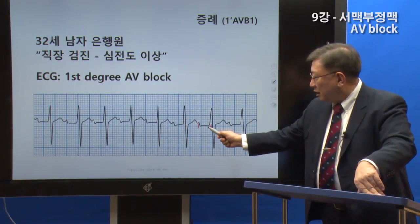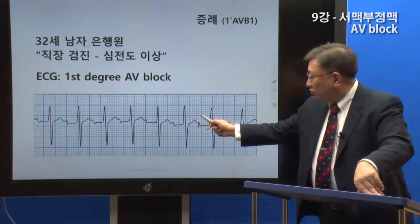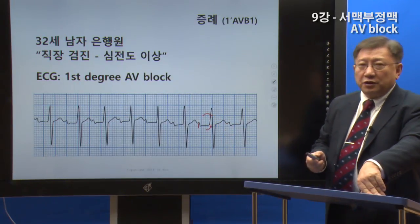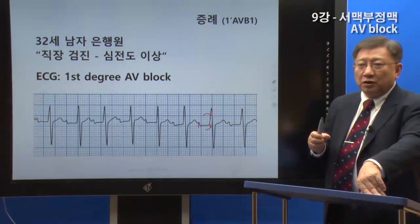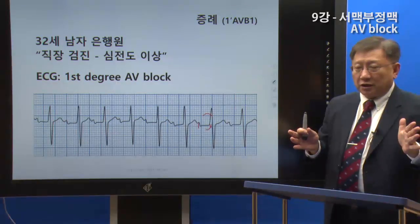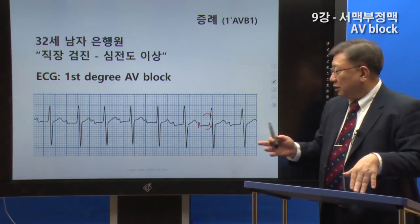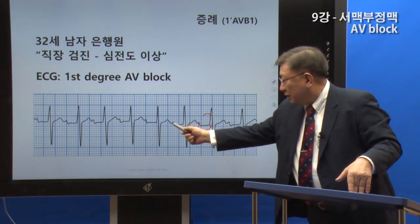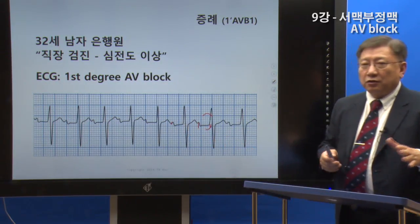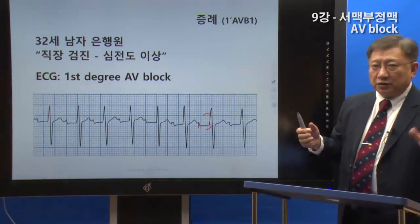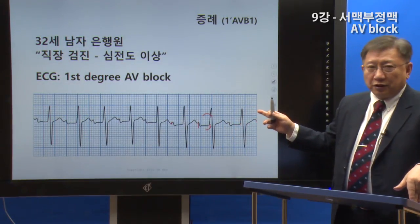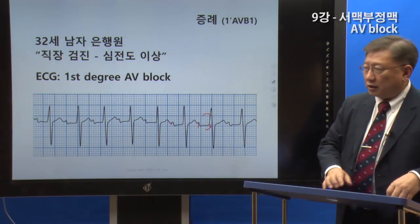This is the distance between 0.2 seconds and 0.2 seconds. In this case, this is the distance from 1 to 1, so this is the distance of 1.2 seconds — referring to the PR interval measurement on the ECG.